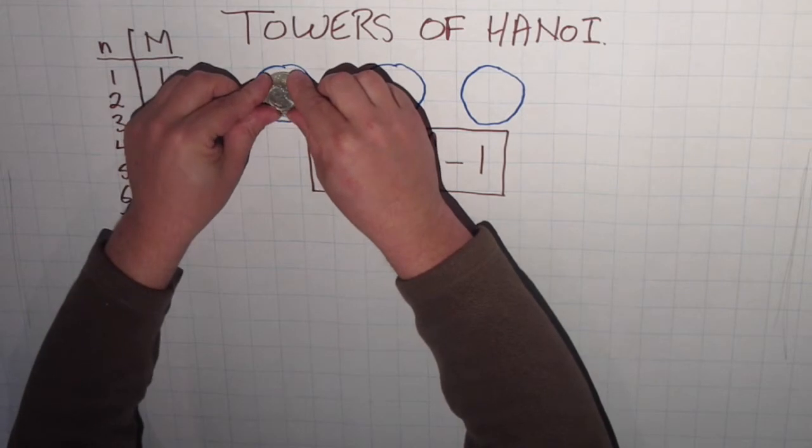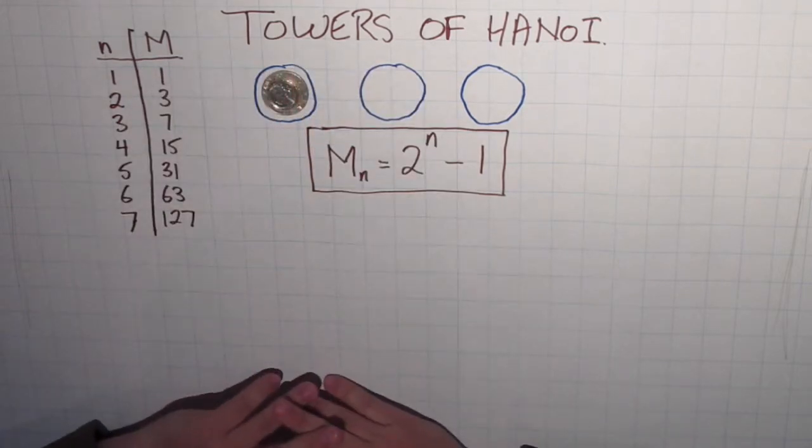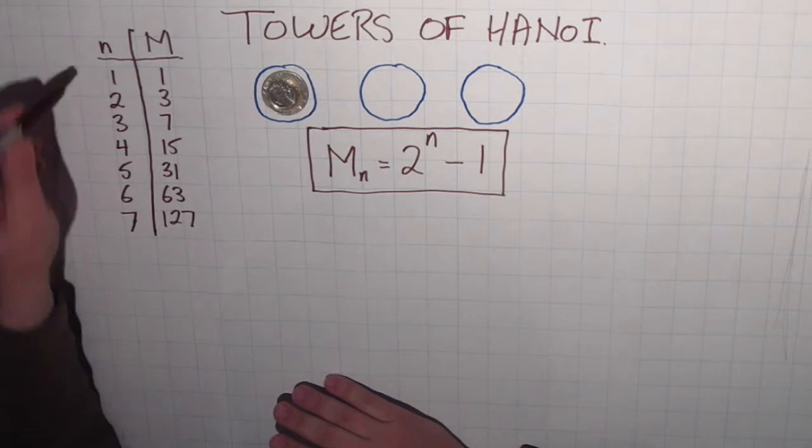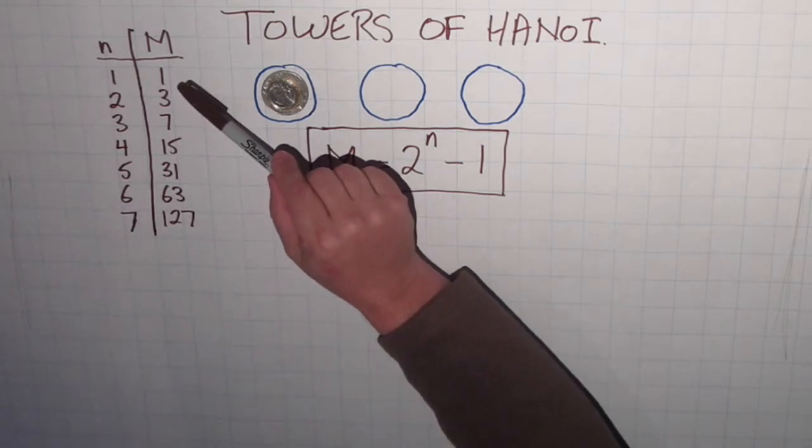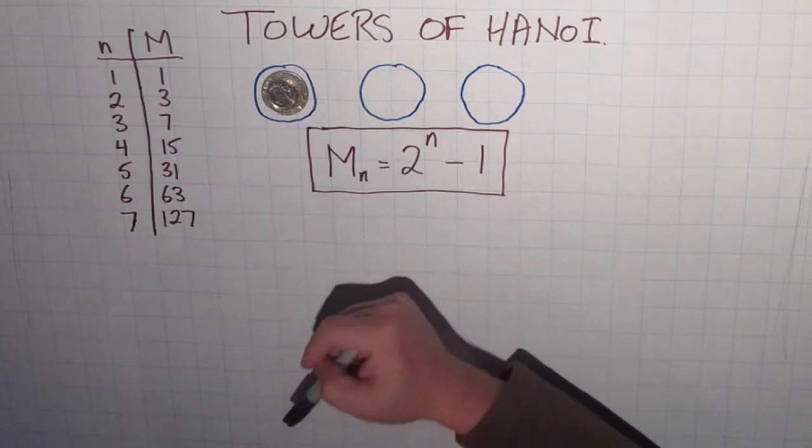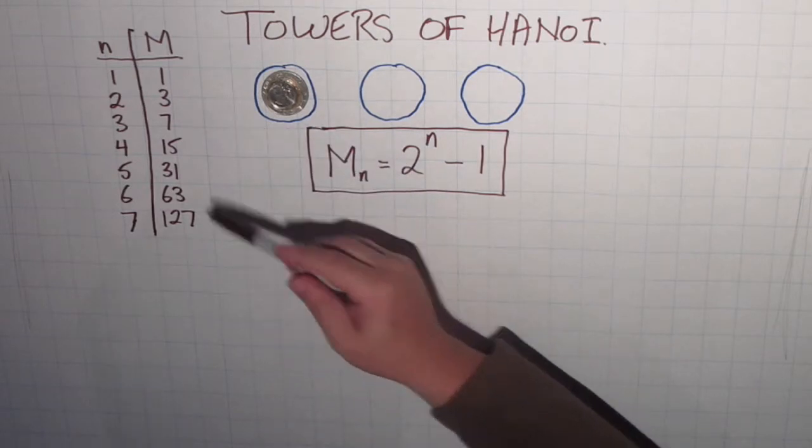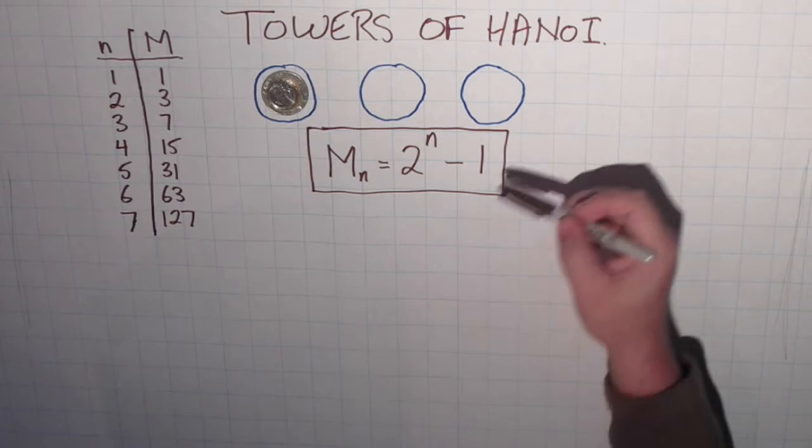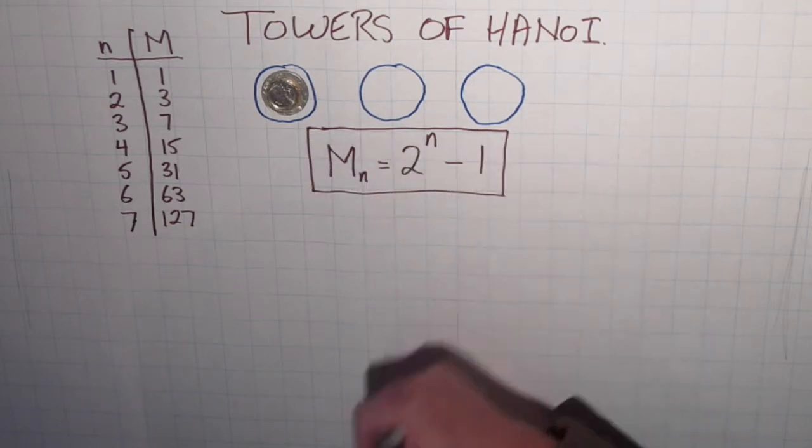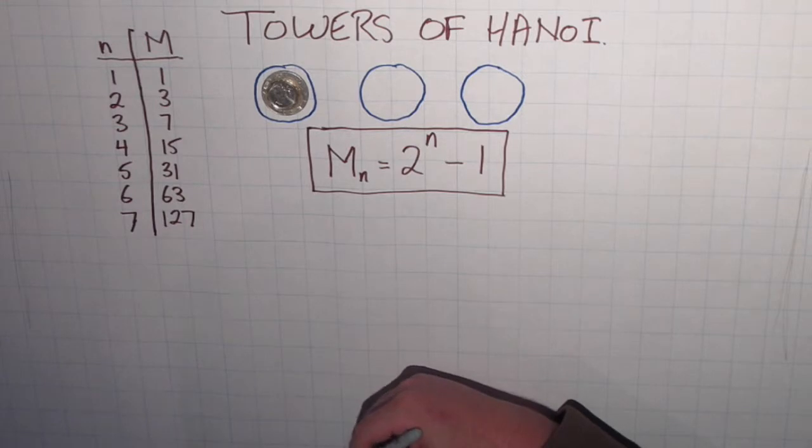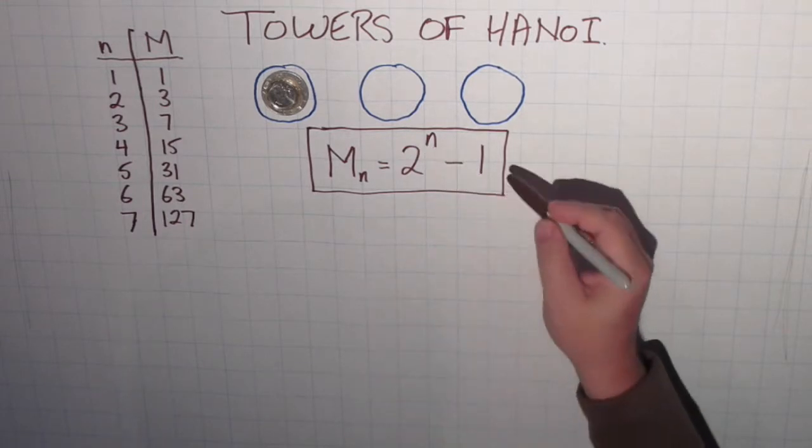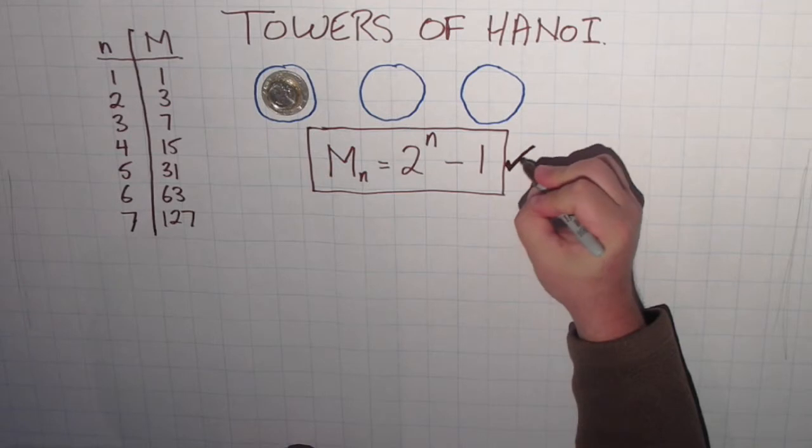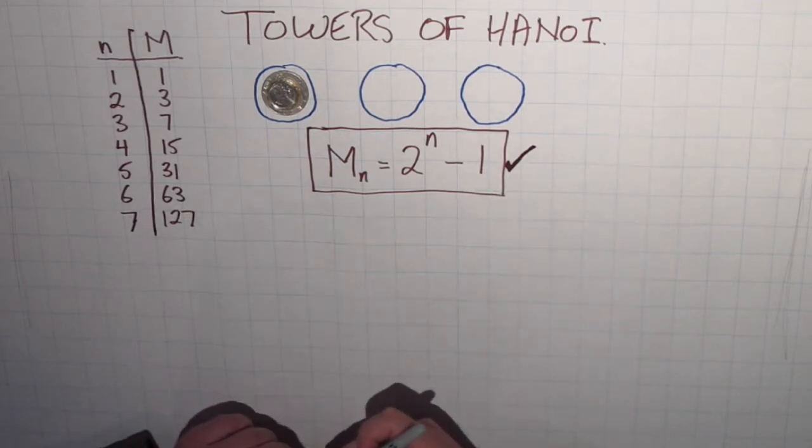What we were interested in was the minimum number of moves it takes to solve the puzzle. We produced a table where n is the number of coins in the stack and uppercase M is the minimum number of moves. So if there was one coin it takes one move, two coins takes three moves, three coins takes seven moves, and so on. We ended up producing this particular formula for calculating the minimum number of moves to move any stack of n coins: M_n = 2^n - 1. In the last episode we proved this formula works all the time regardless of how tall the stack was.